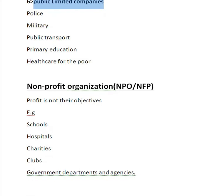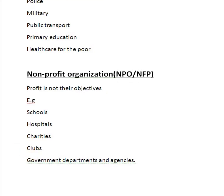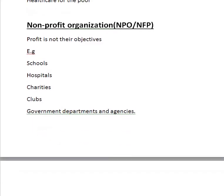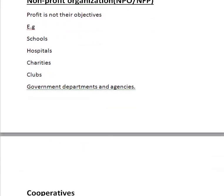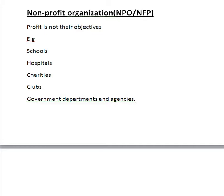The next topic is non-profit organizations. Like NGOs, their aim is not to generate profit — profit is not their objective. Examples include schools, hospitals, charities, clubs, government departments, and agencies. Their first priority is not to generate profit; they exist to provide good services or to educate people.